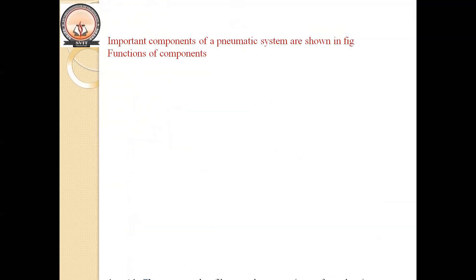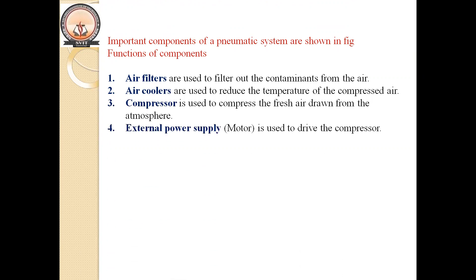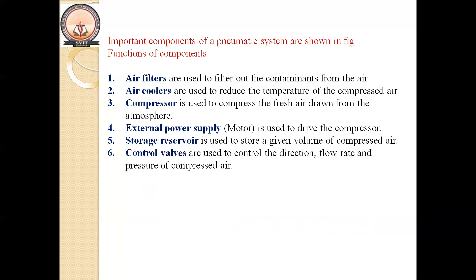Now, the functions of components in the pneumatic system: Air filters are used to filter out contaminants from the air. Air coolers are used to reduce the temperature of the compressed air. The compressor is used to compress fresh air drawn from the atmosphere. The external power supply or motor is used to drive the compressor. The storage reservoir is used to store a given volume of compressed air.